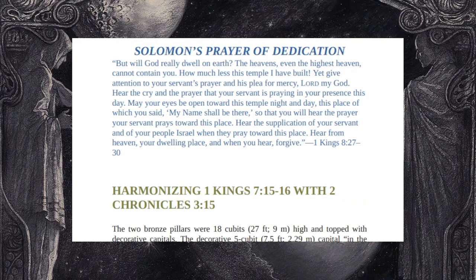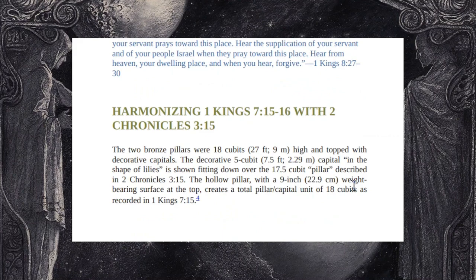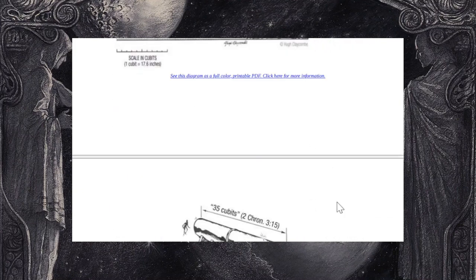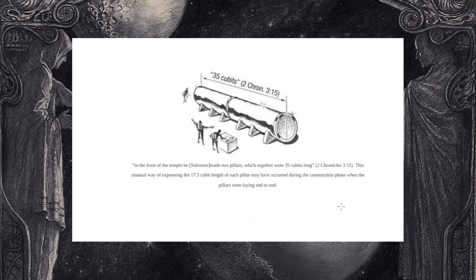Now we're going to switch over to Randall Price's book on the temple. This is a converted EPUB so the formatting is a little wonky, but there's good information to look at. The section we're going to begin with is the harmonization of 1 Kings 7:15-16 with 2 Chronicles 3:15, specifically dealing with the pillars. It'll actually be easier to follow if I do this in reverse order, starting lower and moving up. Because in 2 Chronicles 3:15, it refers to the pillars being 35 cubits long — and we discussed that in the chapter 3 video. Many commentators take this as just an exaggeration.